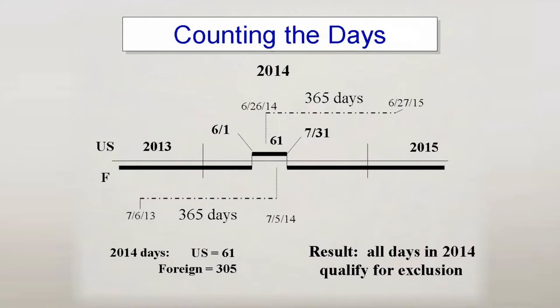Counting days for the physical presence test can be tricky. It doesn't mean the expat must be out of the US for 330 days during the year, only that any particular day must be in a period in which he or she is out 330 days. This chart, which is also on my website sfoxcpa.com, shows how an expat could be in the US for more than 35 days in a year and still qualify.